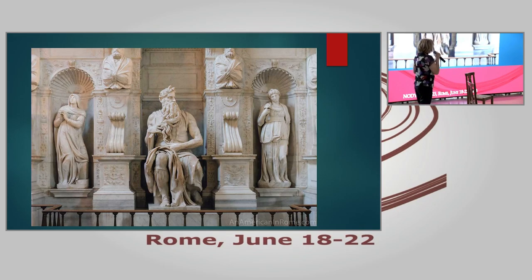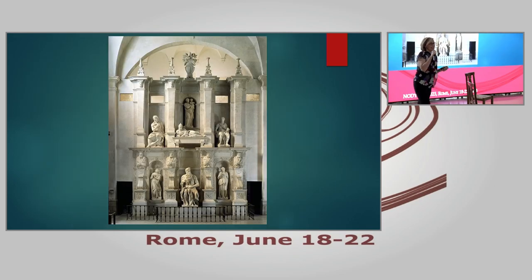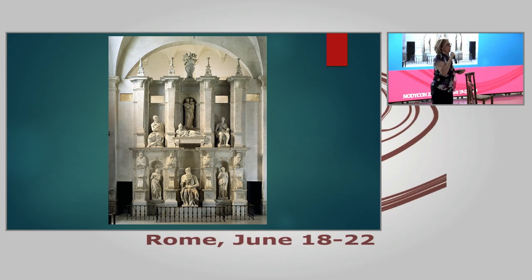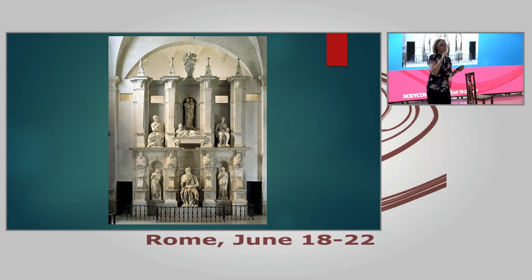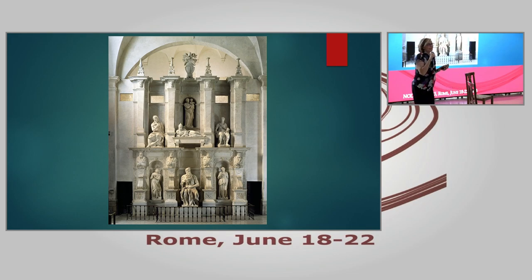The first thing you will certainly notice is that at the very center of the tomb, we see the Moses — not the Pope — which is a little bit unusual. Generally, when you look at a tomb, the deceased is the most prominent figure. But in this case, the Pope is placed on the top — the lying figure you see there — represented as if asleep, which is iconography typical of the late 1400s, representing the dead body as if in a soft passage from life to eternal life. And at the center, we see the Moses.